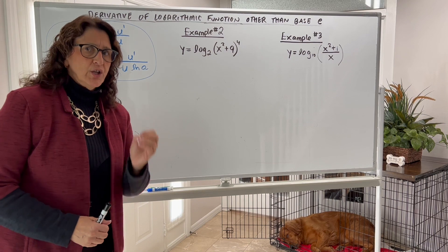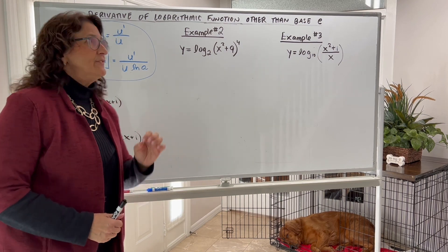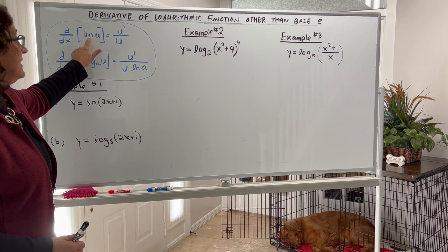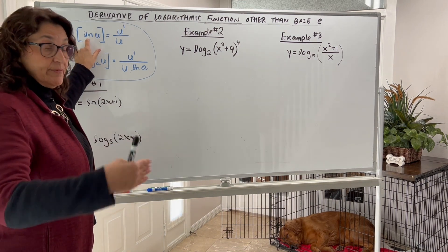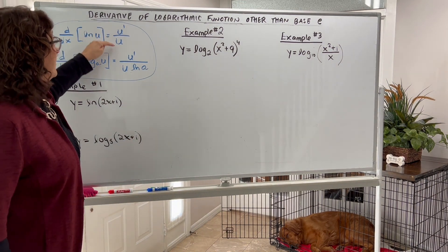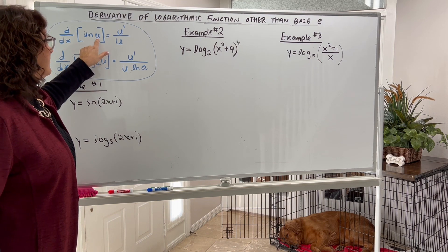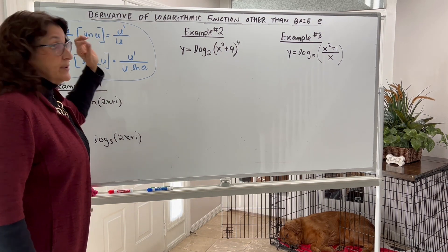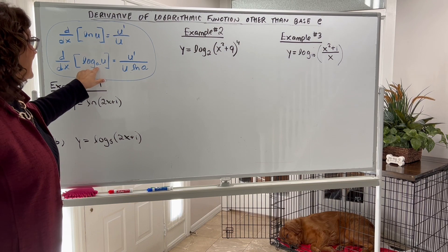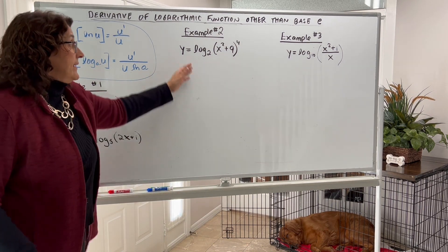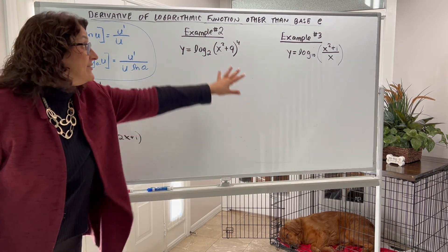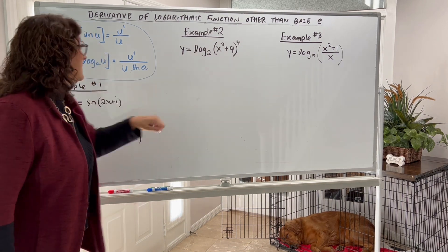To differentiate logarithmic functions, if the base is e, here are your formulas. If you do have base e, natural log is the same thing as log base e, then u prime over u — whatever this quantity is, you take the derivative of it and put it over that. What if the base is not e? What if you have log base 5, log base 2, log base 10?